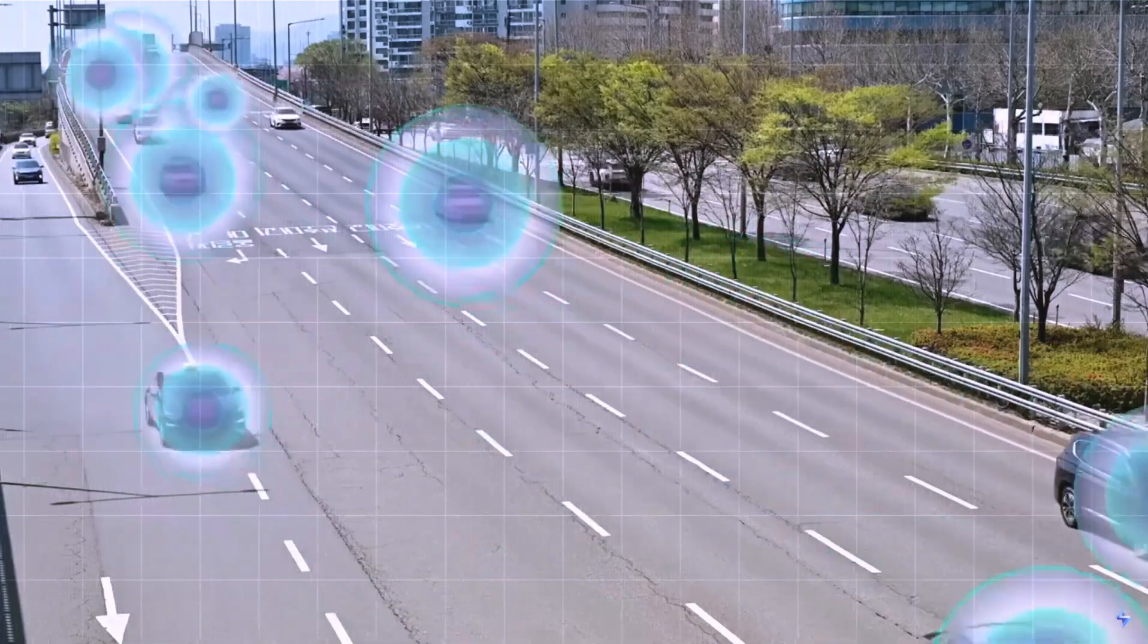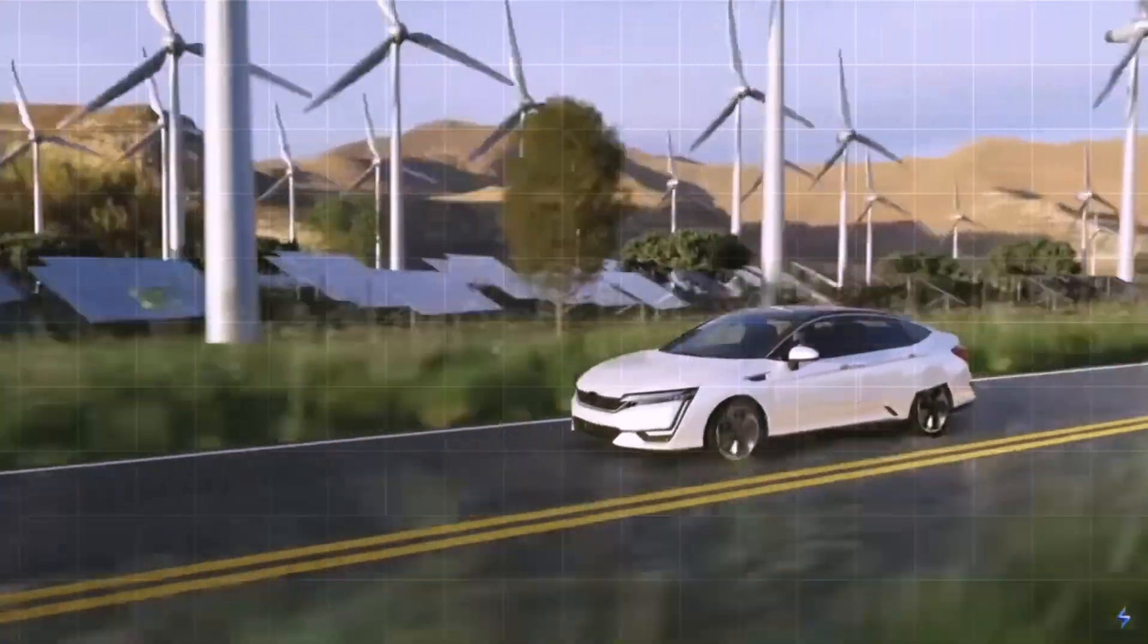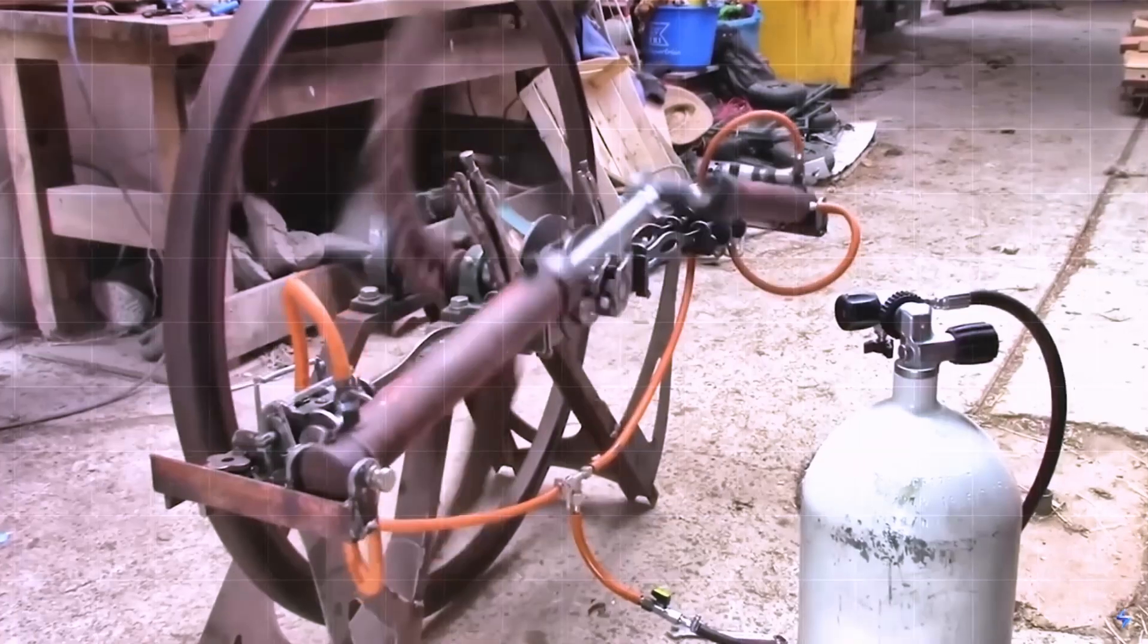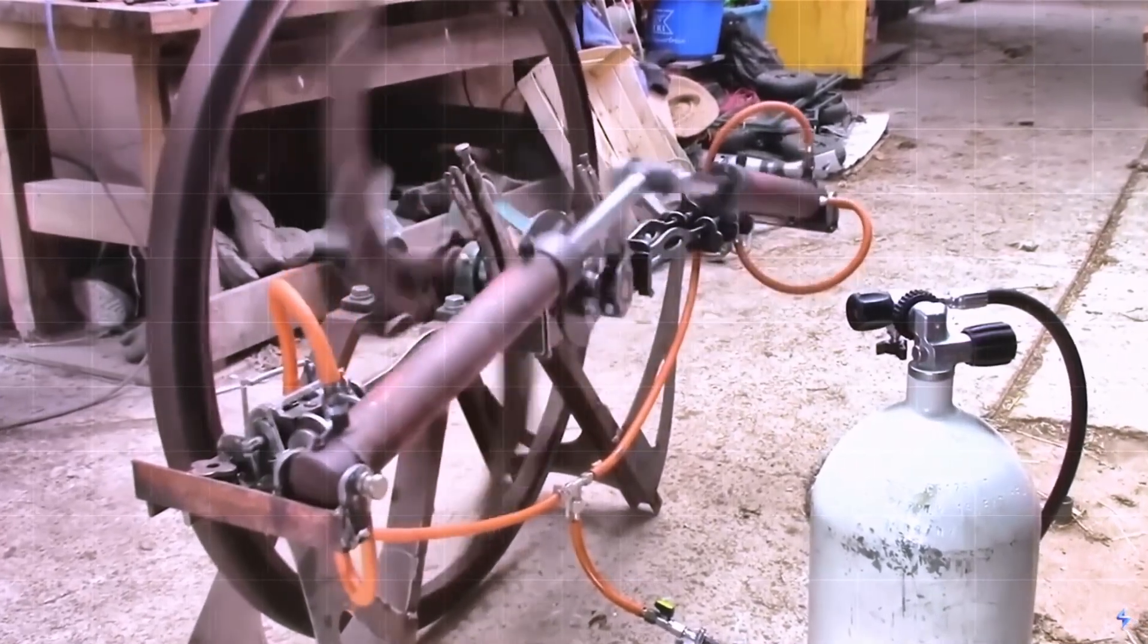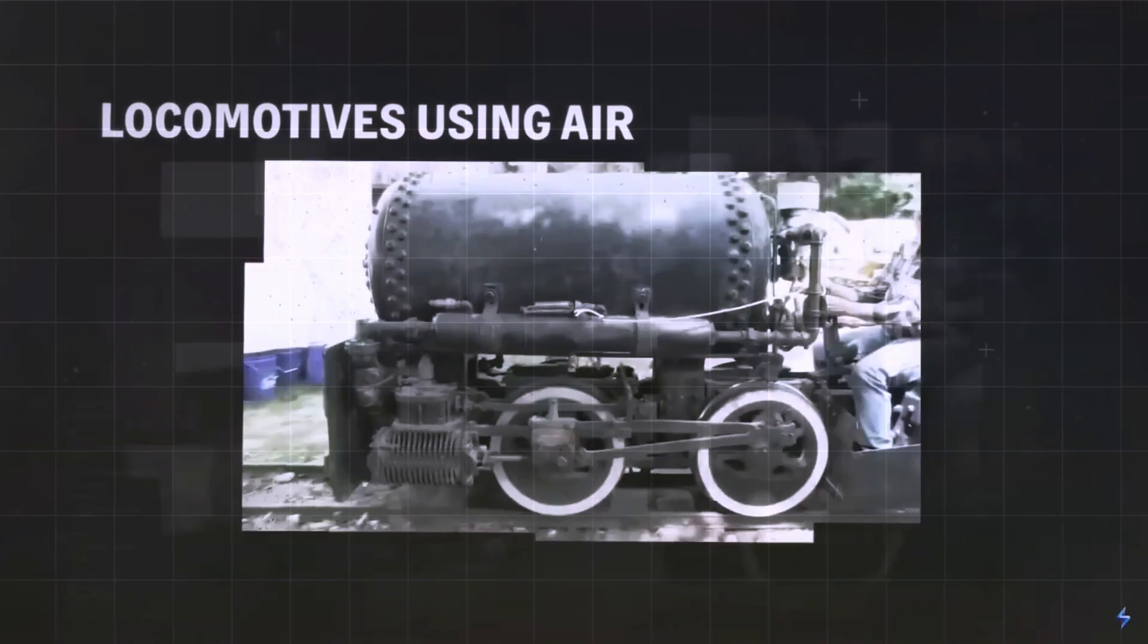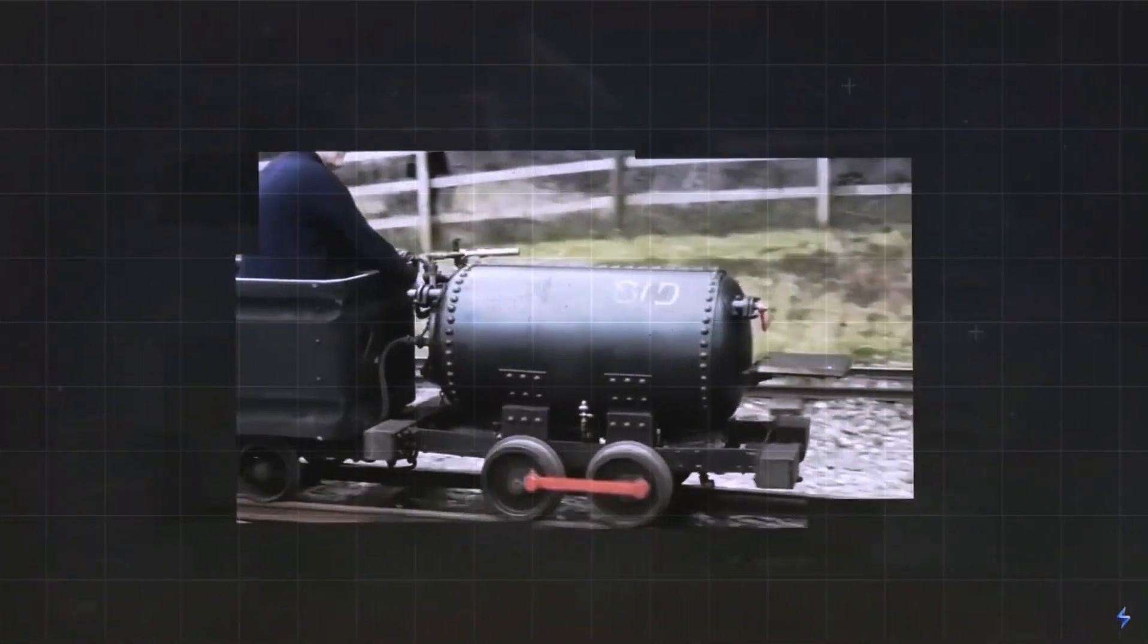GM isn't exactly breaking new ground here. Compressed air vehicles have been around since the 19th century, powering mine locomotives and even trams in European cities like Paris. However, their limited range and the rise of powerful internal combustion engines led to their decline.